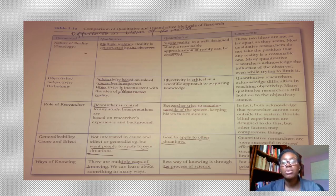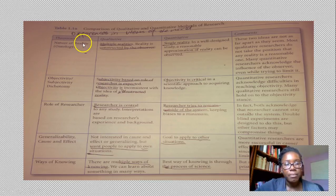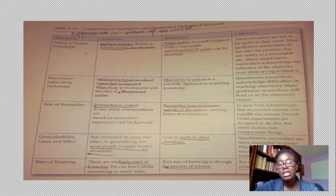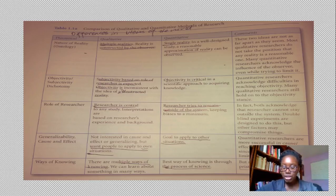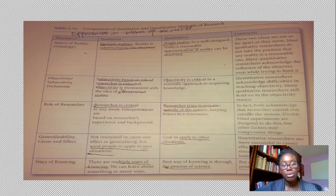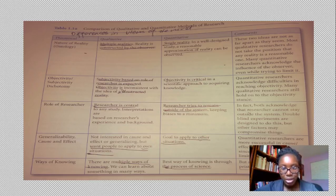The book also compared and contrasted qualitative and quantitative methods of research. Theoretically, a qualitative researcher deals in multiple realities — realities constructed by the observer. Objectivity is not the goal; subjectivity is the goal. The researcher is expected to be subjective, because it takes into account the background of the person doing the research, the gender, the culture, the ethnicity. The researcher is central to any study done. They're not interested in generalizations and cause and effect, but want people to apply findings to their own situations.